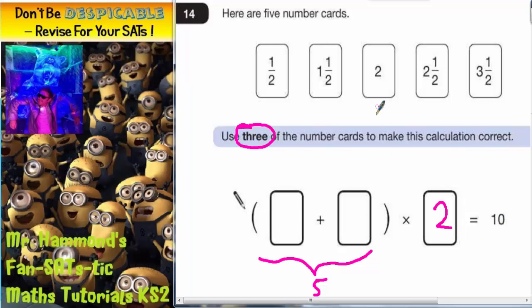So all we're going to do now is try and find two more of the cards that add together to make five. Well I've already used two so I can't use that one again. So which two of these add together to make five?